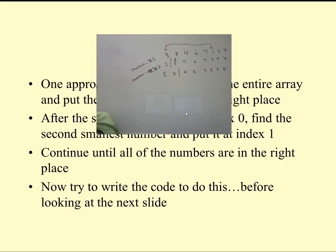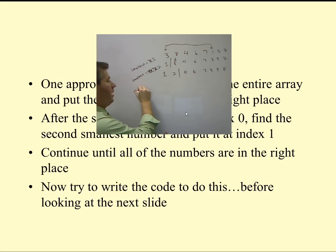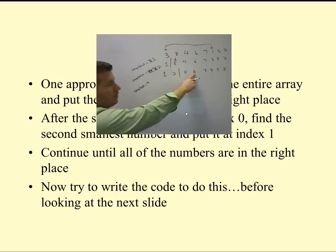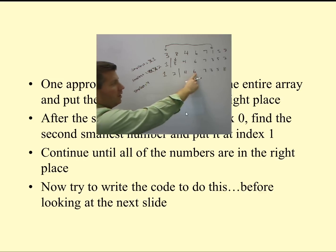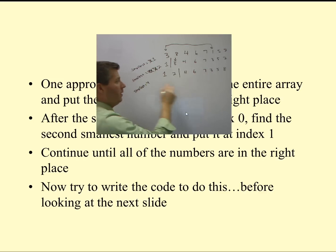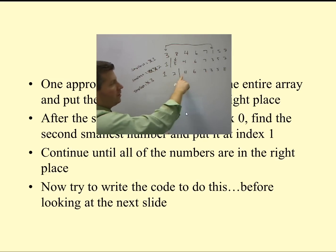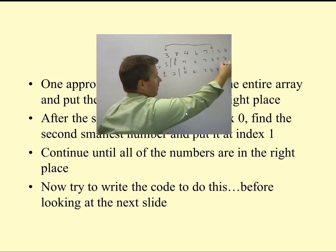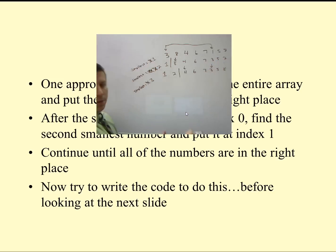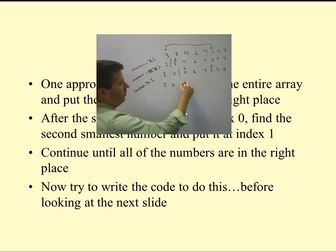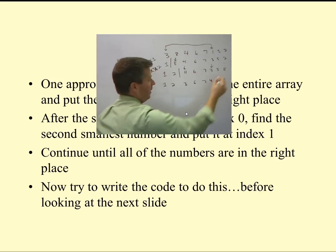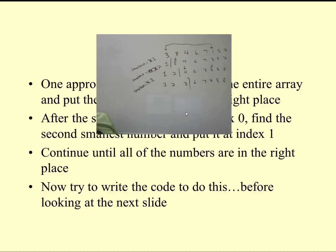Now we know two numbers are sorted and in the right place. We start over again. Our smallest number is 4. We say: is 4 less than 6? It is, leave it alone. Is 4 less than 7? It is. Is 4 less than 3? No. So we update smallest to be 3. Is 3 less than 5? Yes. Is 3 less than 8? Yes. So we swap number 4 with number 3. We get 1, 2, 3, 6, 7, 4, 5, 8. Now we know our first three numbers are sorted.